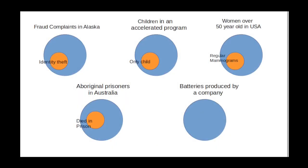In the case of Aboriginal prisoners in Australia, we might be concerned about whether they died in prison — a social justice issue. In the case of batteries produced by a company, we might be interested in whether an individual battery was sold to the government. The population parameter would be the proportion of batteries produced by the company that are sold to the government. In each of these examples, the population parameter is going to be a proportion.